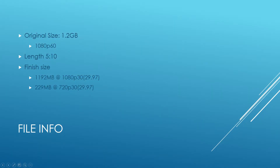This is pretty straightforward. I used a 1.2 gigabyte original file size, 1080p, at 5 minutes and 10 seconds long. The finish size at 1080p, 30 FPS, is right around 1.2 gigs. Now, downsizing it to 720p cut that way down to about just under 230 megabytes. So those are the tests I ran. Let's take a look at how all these cards performed.